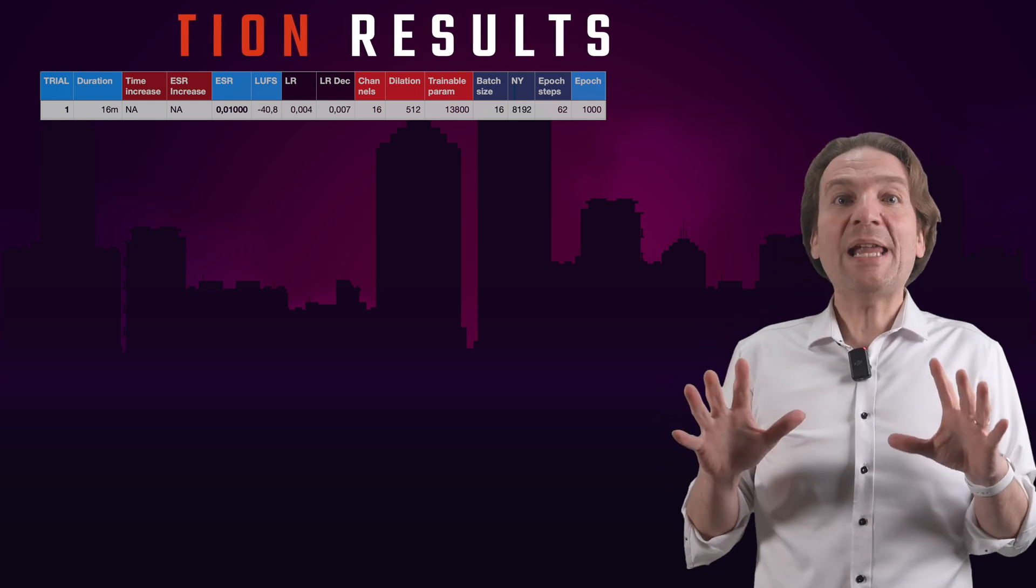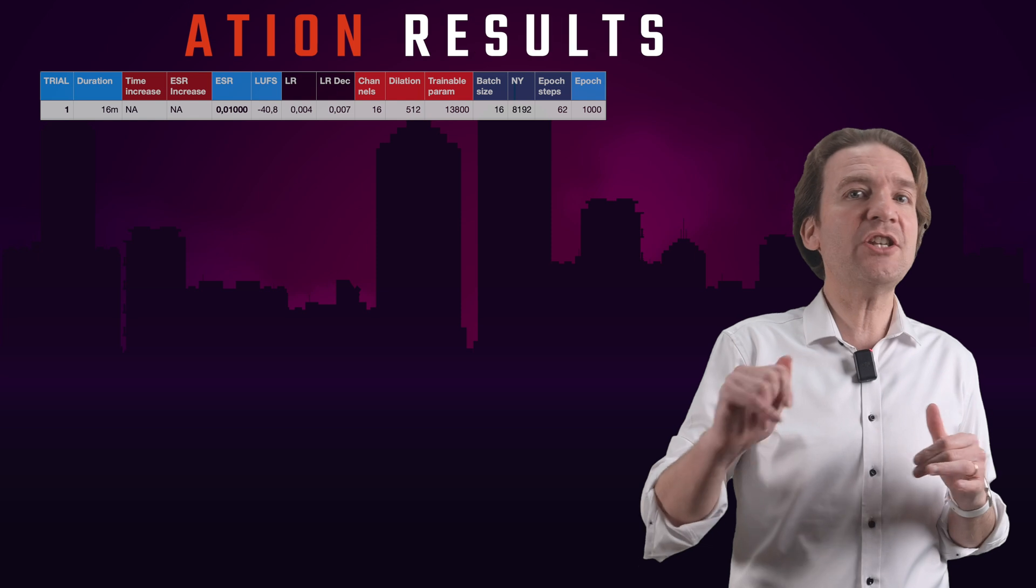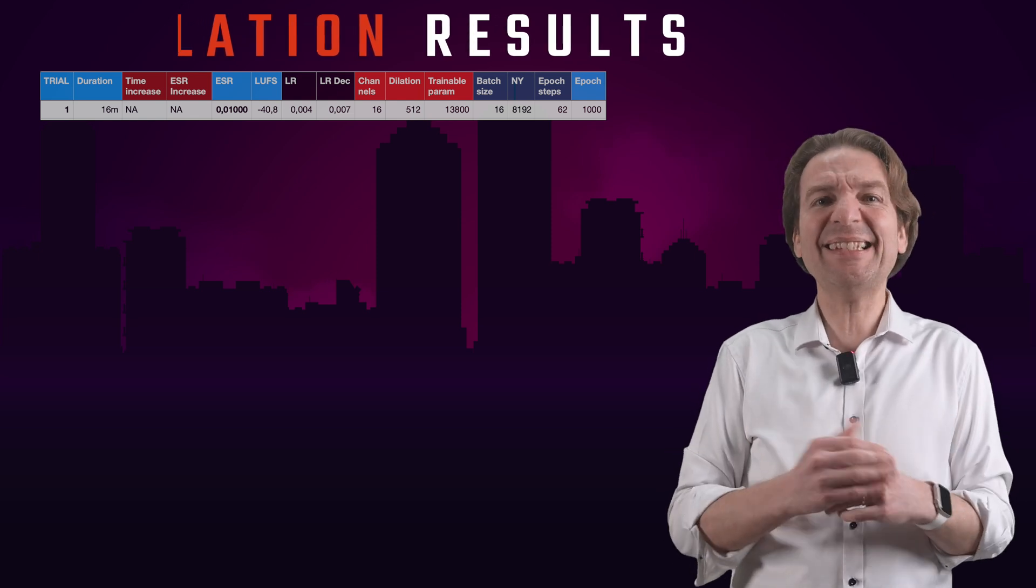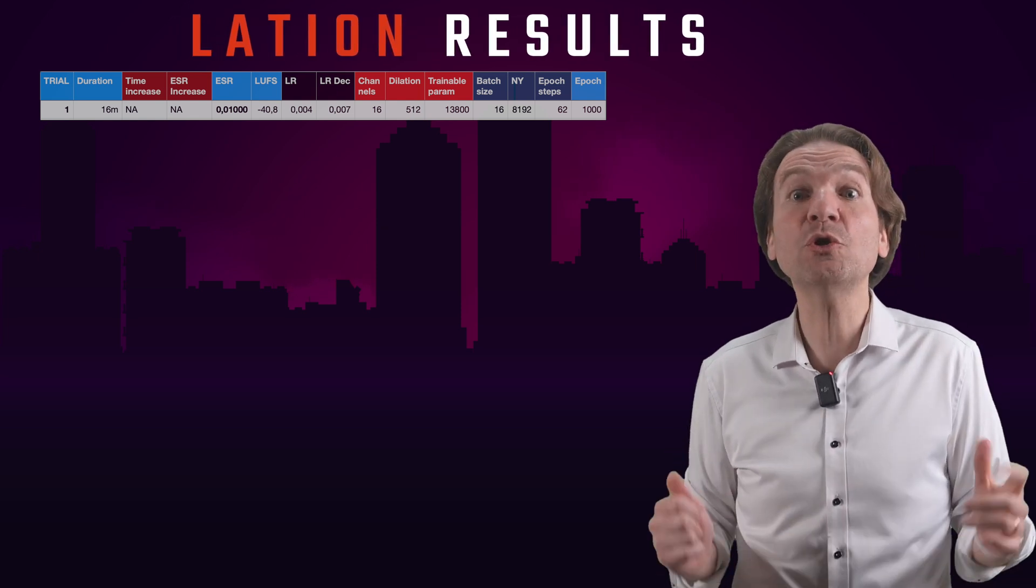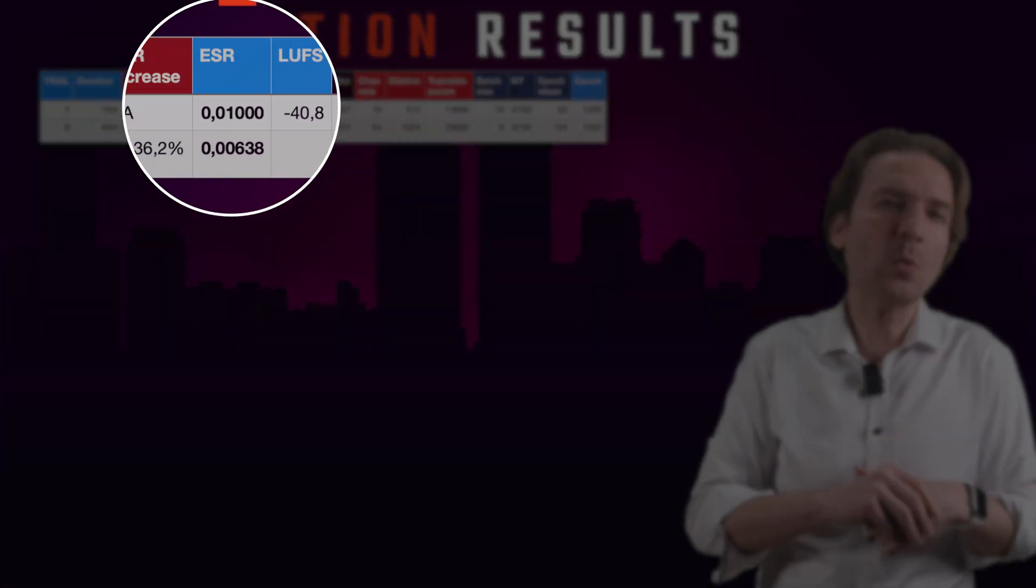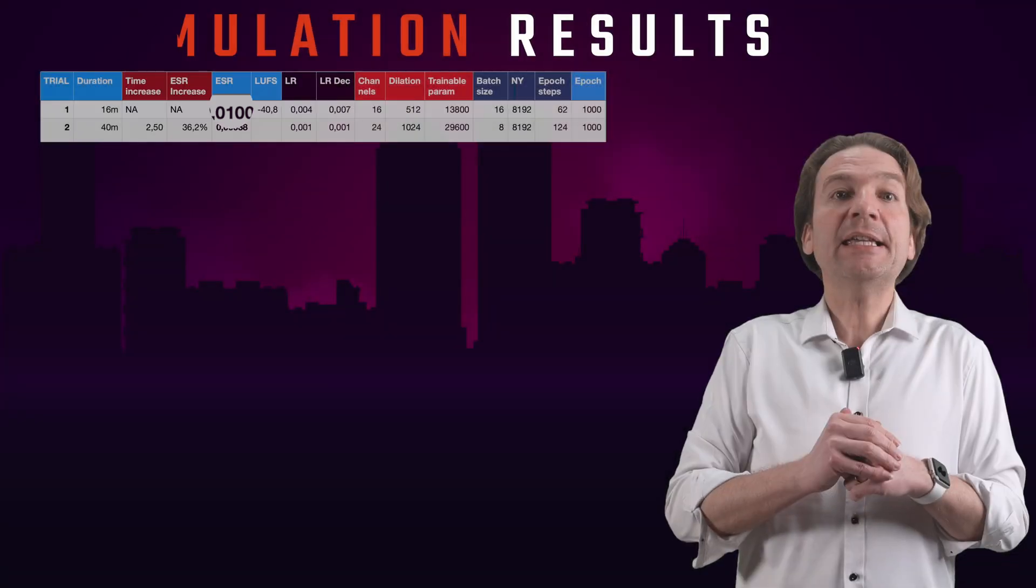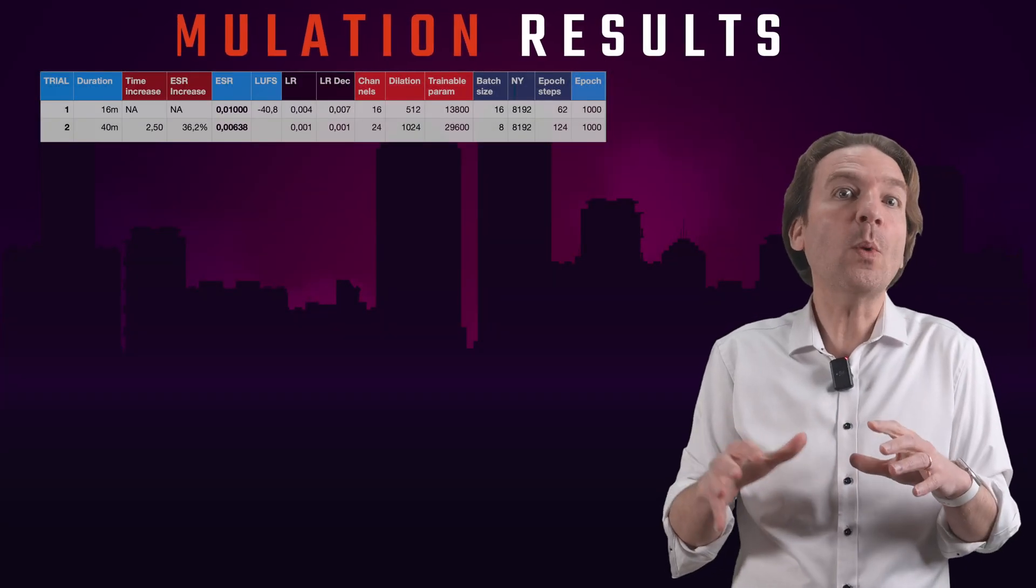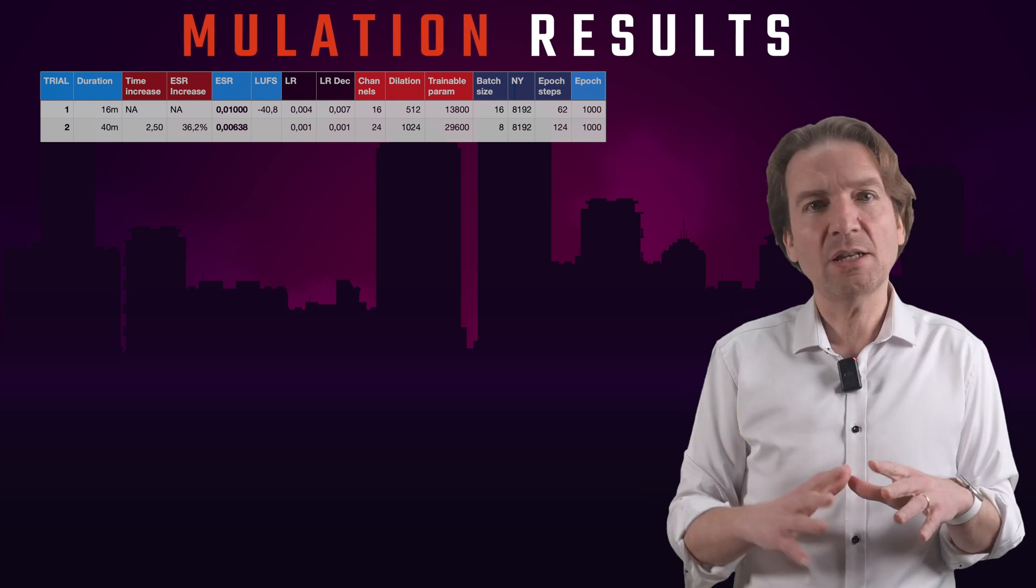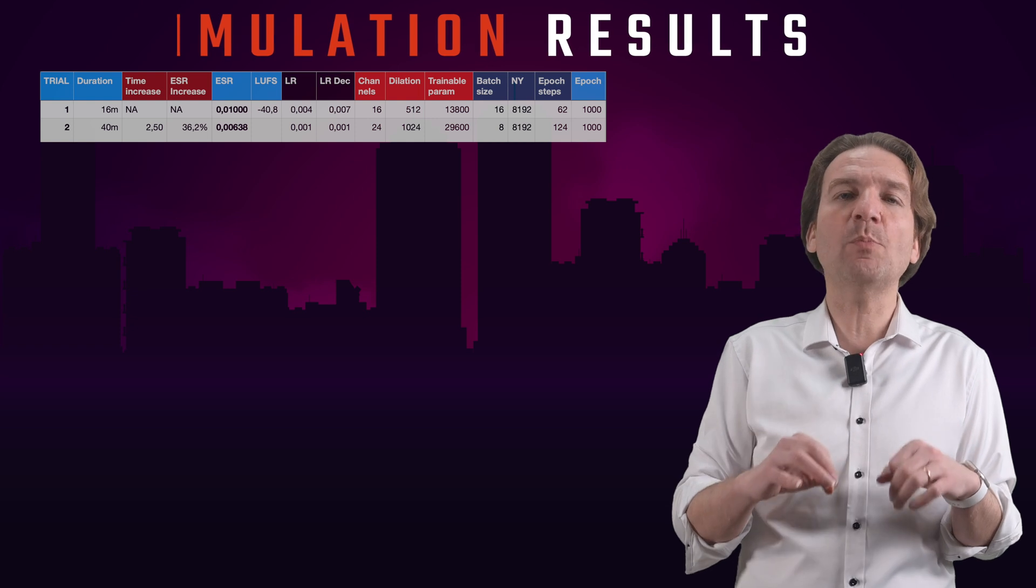For the trial number 2, let's keep the epoch fixed to 1000 and increase the dilation and the channels, decreasing the learning rate and also the batch size. What are the results? Well, the ESR went down to 0.00638, even if the computational time went up to 40 minutes. So I obtained a 36% increase in performances, but more than doubling the computational time.